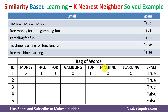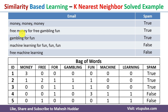The unique words include: money, free, for, gambling, and so on. Once we write down all unique words, we count how many times each word appears in each document. For example, 'money' appears three times in the first document, so we write 3 there; all other words are zero. For the second document, 'money' appears once, 'free' twice, 'for' once, 'gambling' once, and 'fun' once.